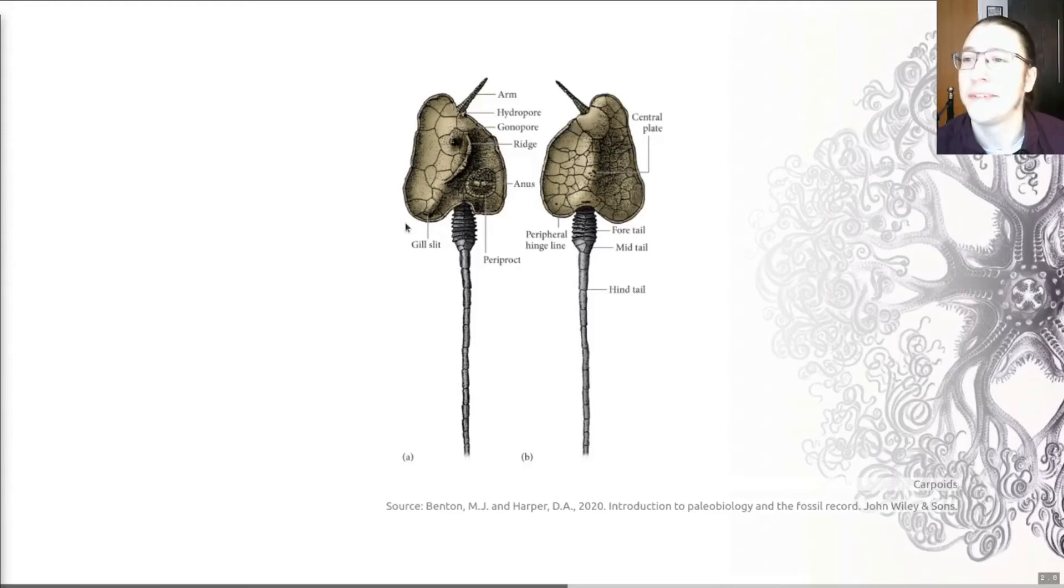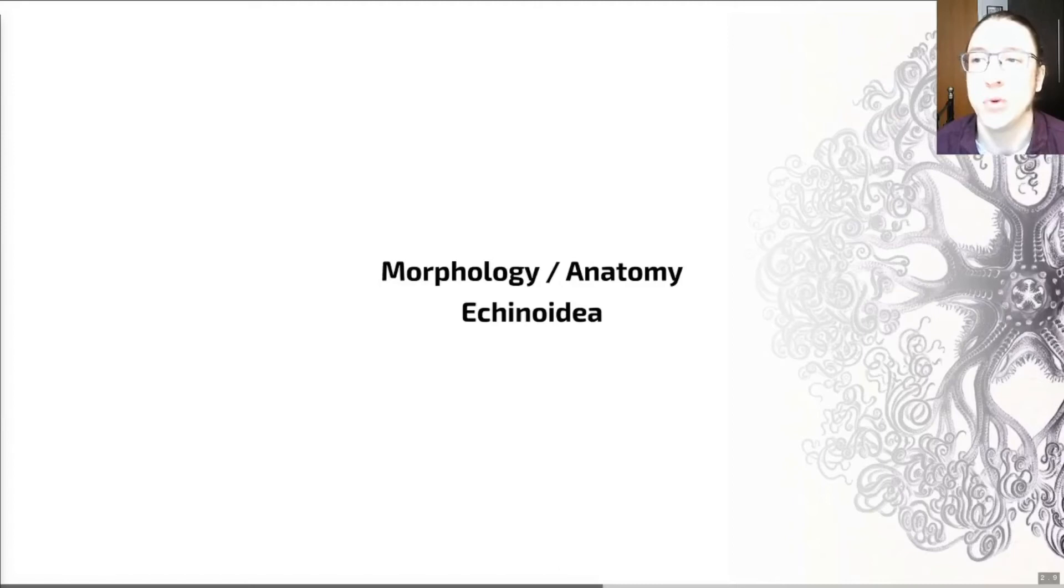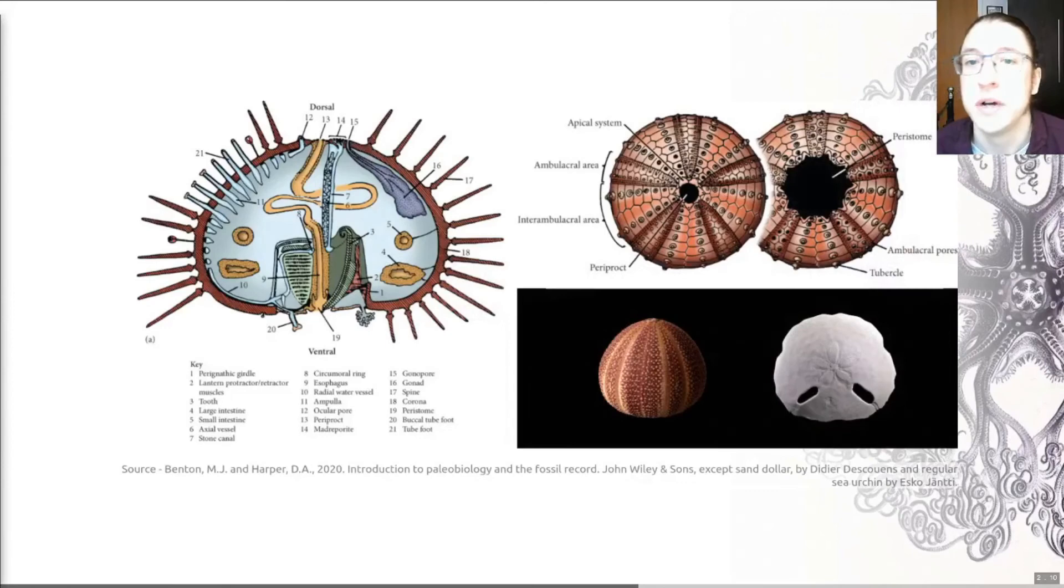We're going to move on now to the echinoids. Remember, we've got the Echinodermata, that's our phylum that includes crinoids and starfish and sea cucumbers. And then within this, one of the groups is the echinoids. The echinoids, which we're learning about now, are the sea urchins and sand dollars. These are animals that have a robust, rigid endoskeleton also called a test. This test is composed of plates of calcite coated by an outer skin, hence it being an endo rather than an exoskeleton, and covered generally with spines.